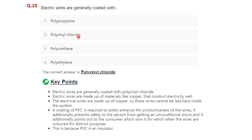Question ten: electric wires are generally coated with polyvinyl chloride (PVC). Just remember the full form of PVC is polyvinyl chloride.